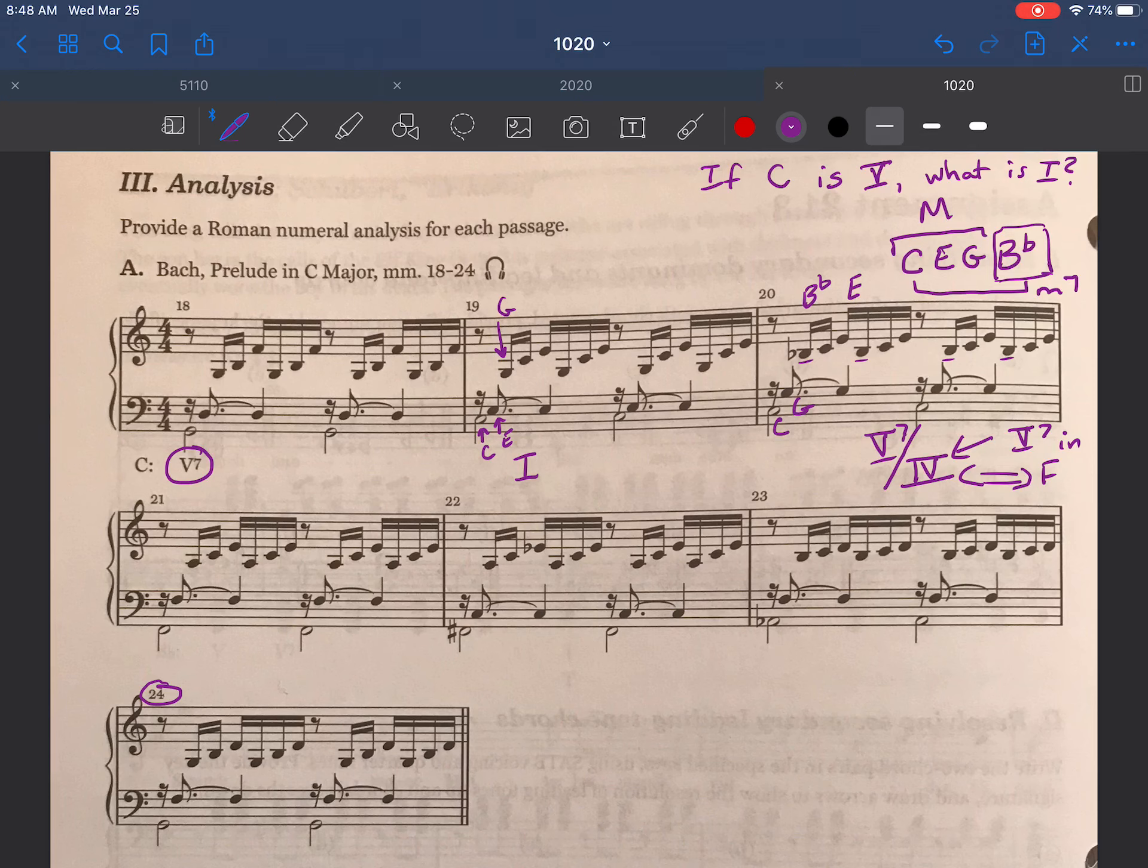And as we continue in measure 21, I see that I have an F in the bass. If I take into account every other note in my measure, I have an F, I have an A, I have C, and I have an E. If I put that into thirds, I have a seventh chord. There's no accidentals to take into consideration. So I know this is a diatonic chord. It's built on F, which is four. It's in root position. And it's a seventh chord.